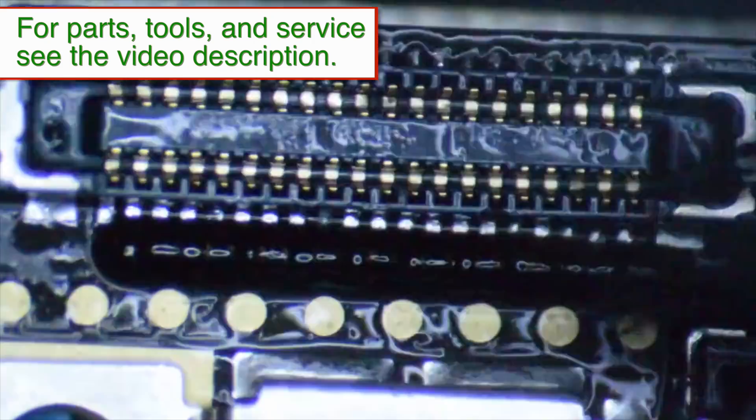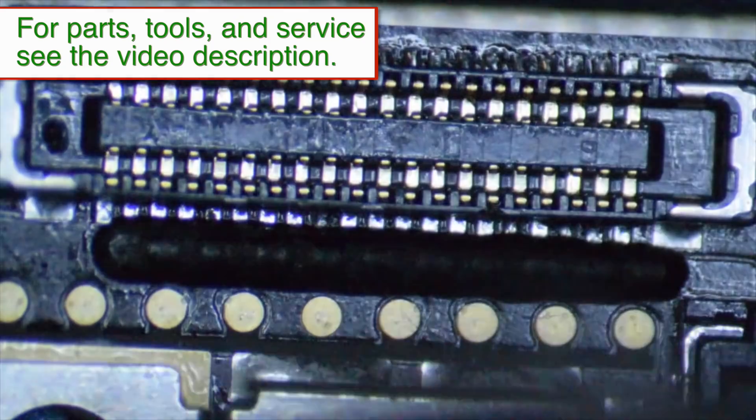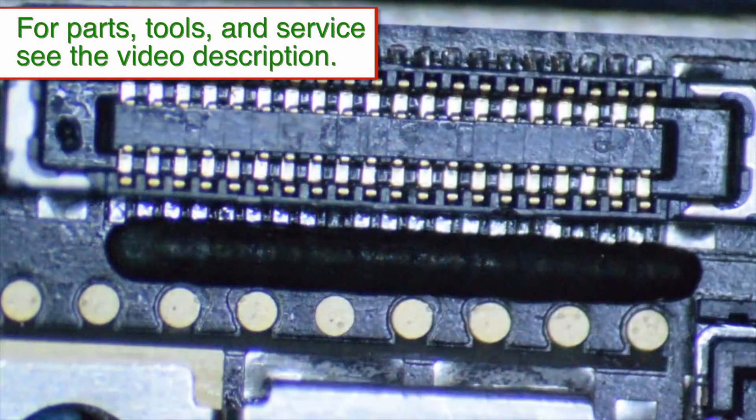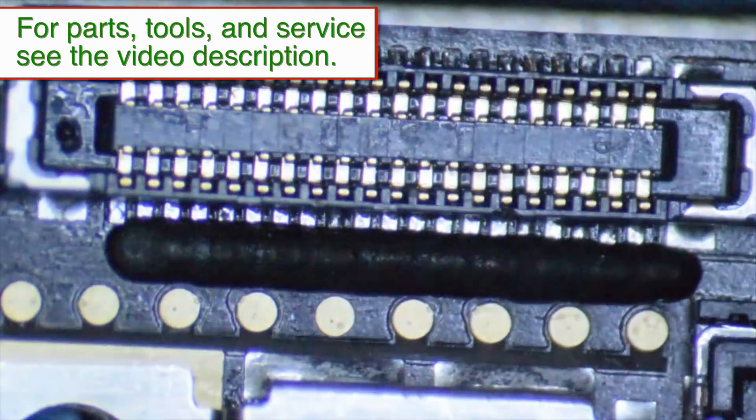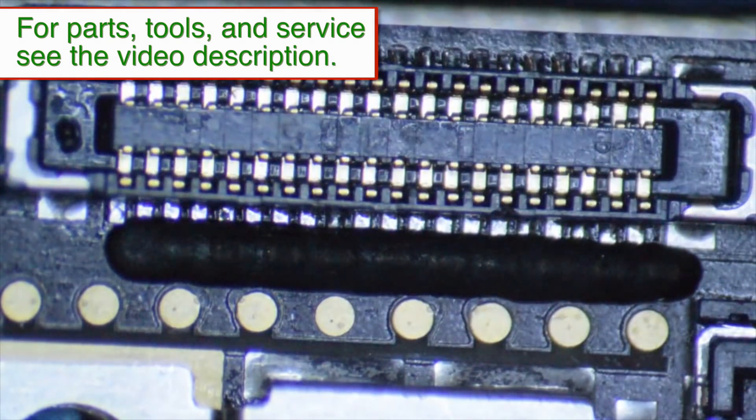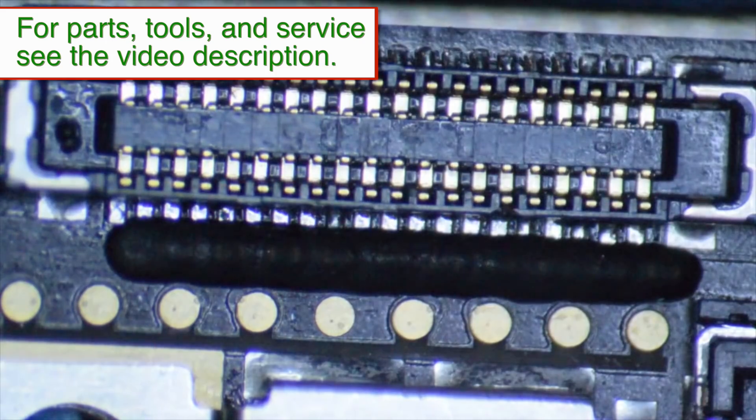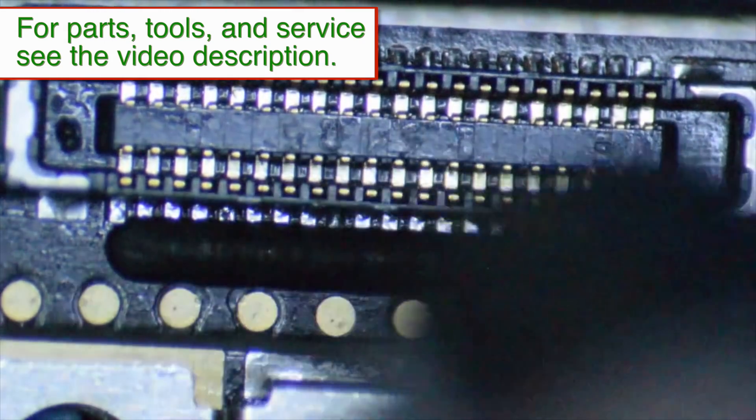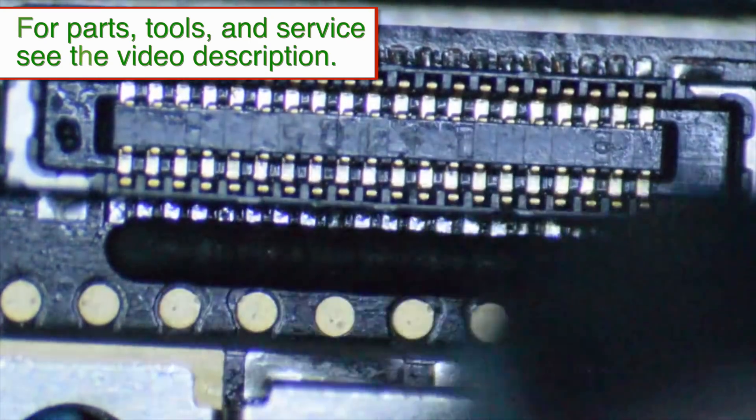Once we've got these all touched up, we'll take some rubbing alcohol and I like to use the hot air at the same time set at a lower temperature, about 150 right now. We'll just go over this with either a swab or a brush until we see all that flux is cleaned out and there's nothing underneath there. Another alternative is that you can put the lower end of the board into an ultrasonic cleaner. But if you do so, you want to make sure that it's 100% dry before you plug anything in.